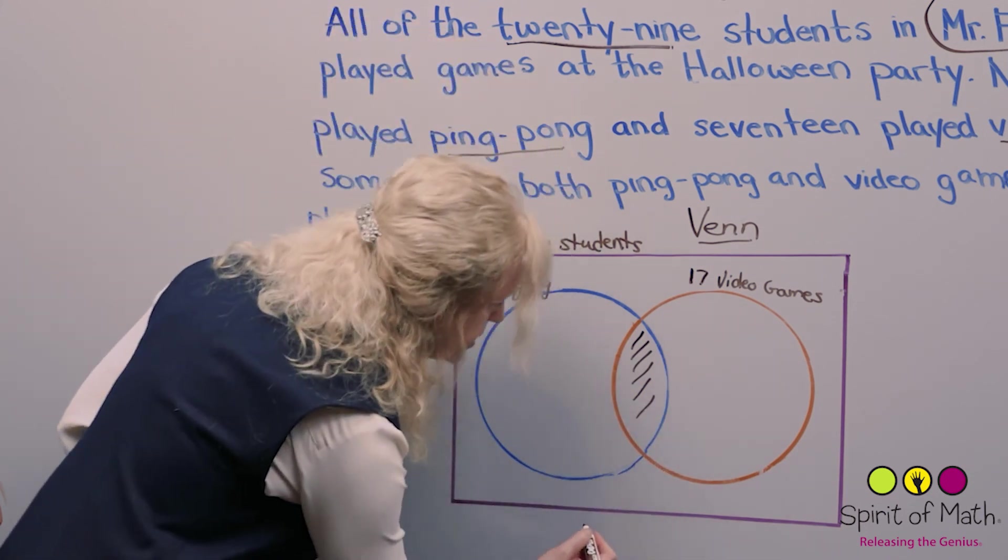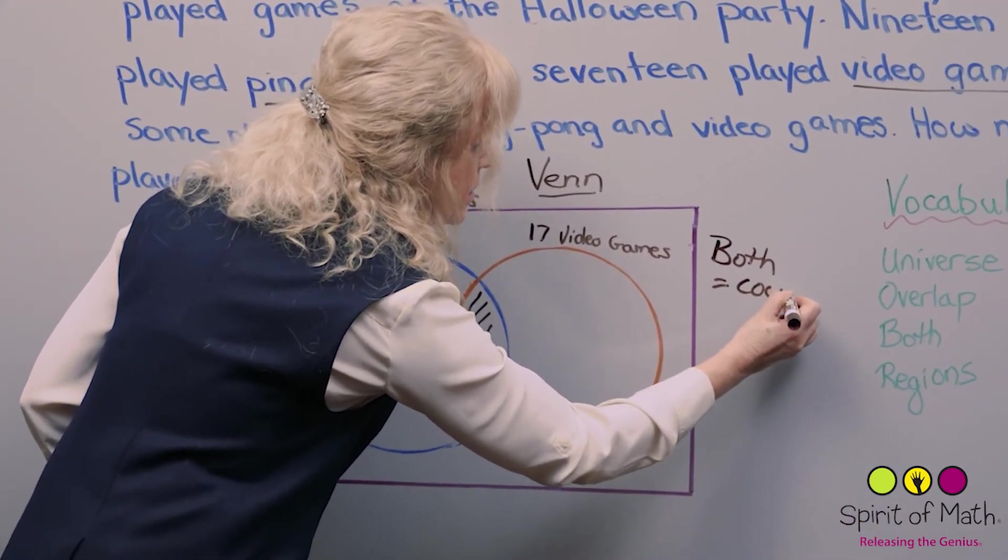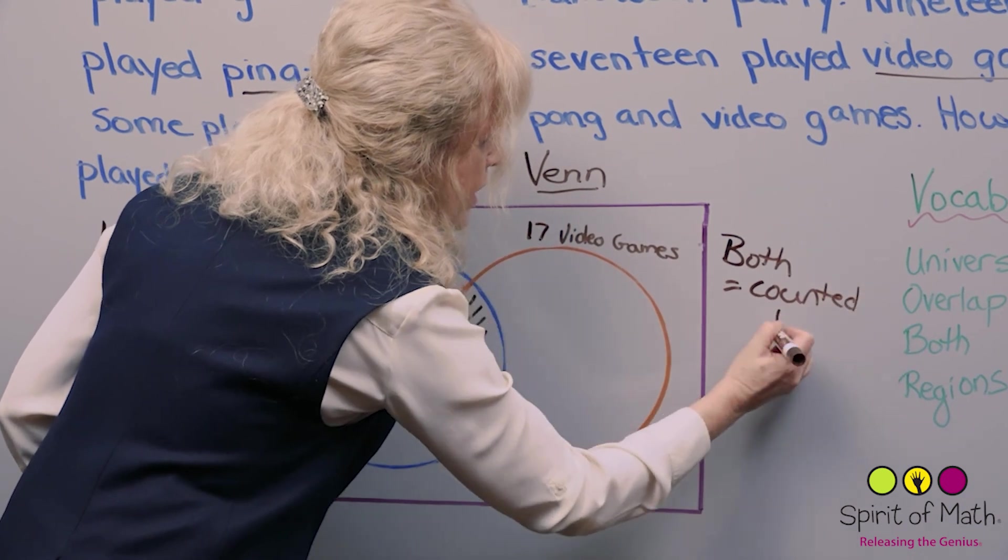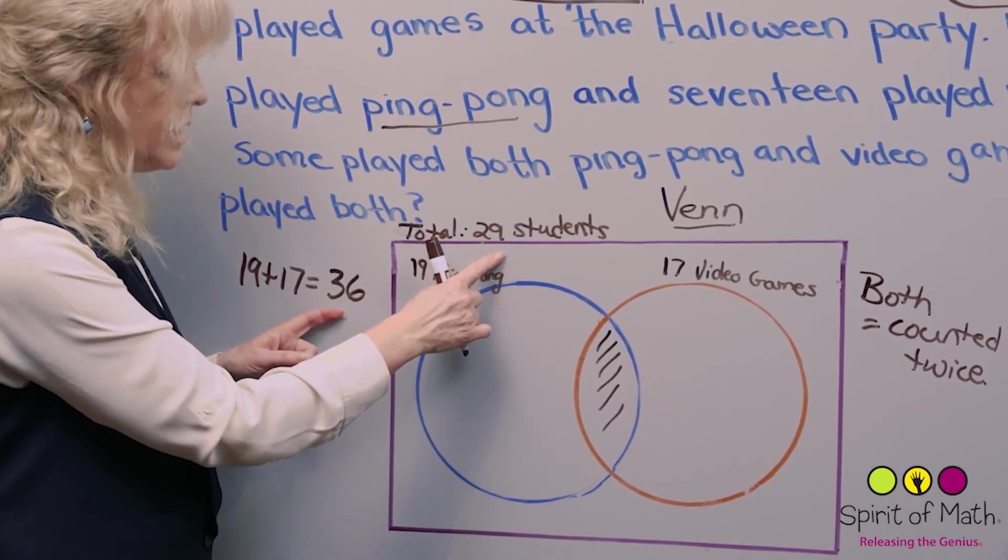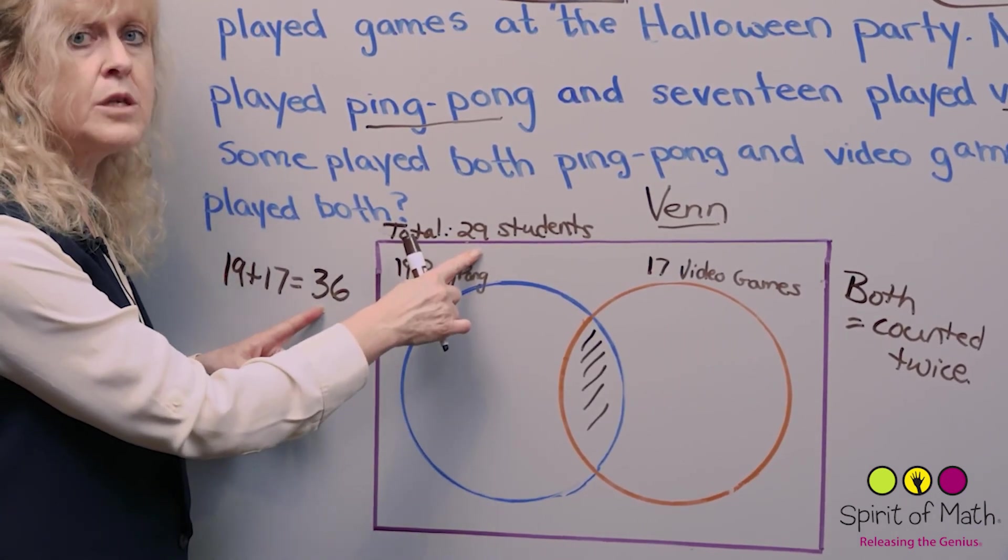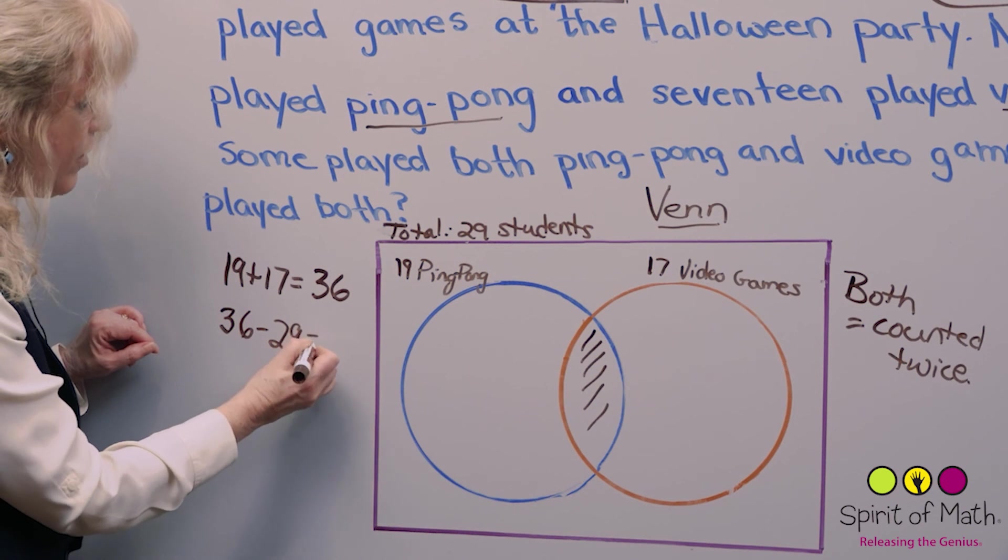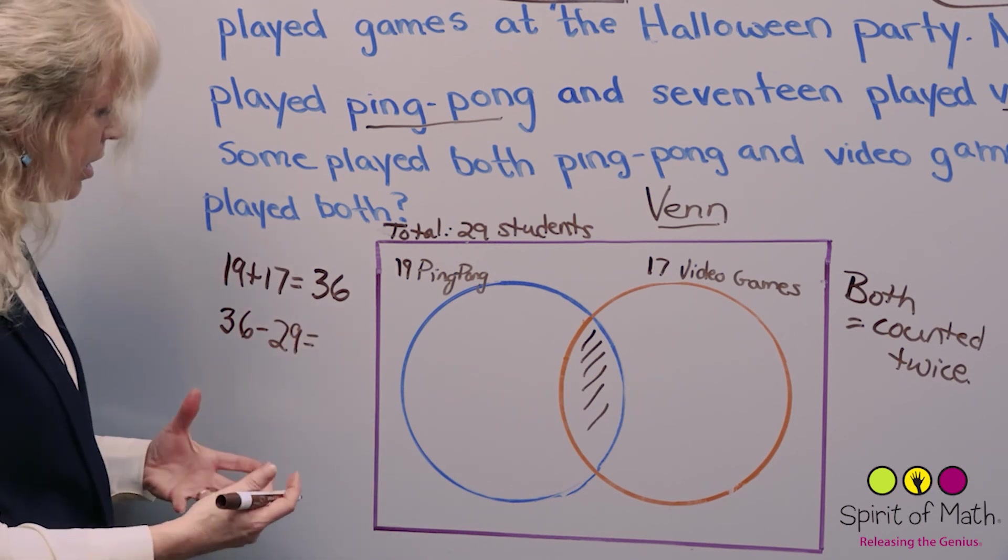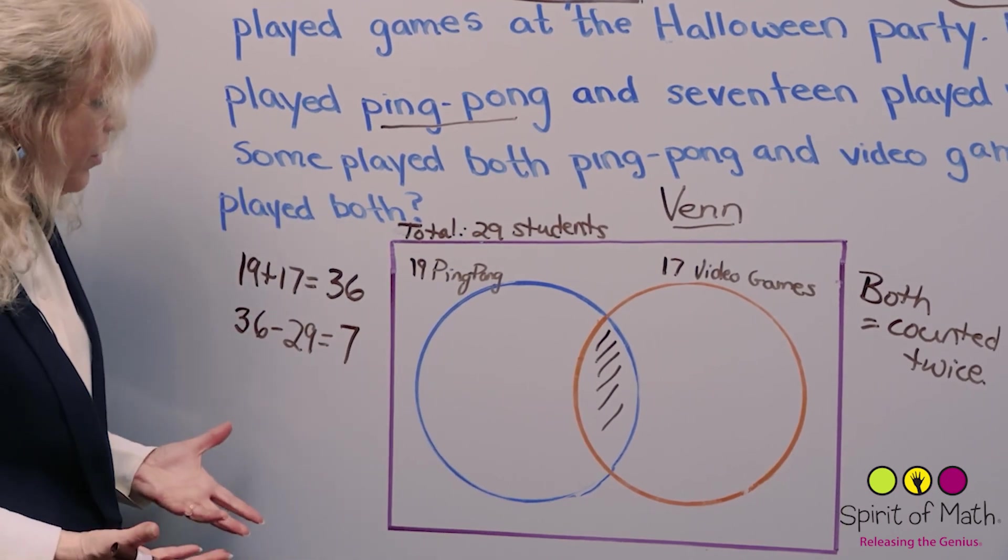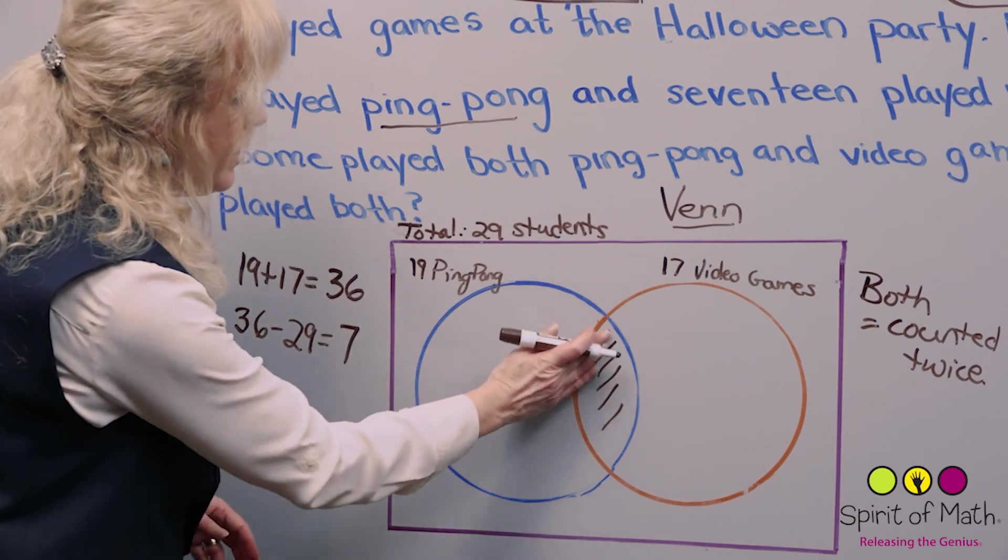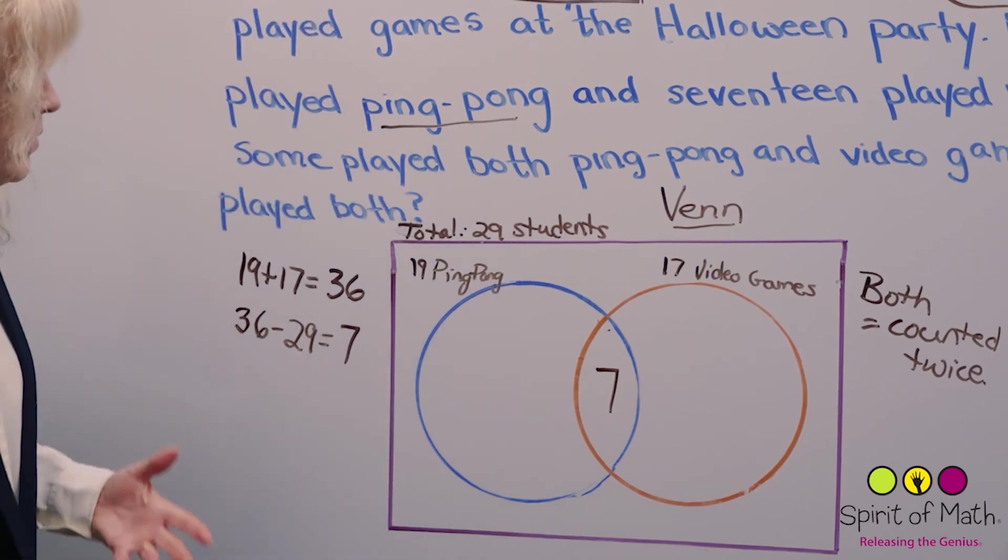I'm going to just write that down here: both equals counted twice. If they're counted twice, then this number here will be larger than this because we have some kids who were counted twice. How many kids were counted twice? Well, you take that 36 then, and you want the kids to figure out how many more were there. You've got seven who were counted twice. Where do you put that in this diagram? You would put that right here. You can have seven counted twice.